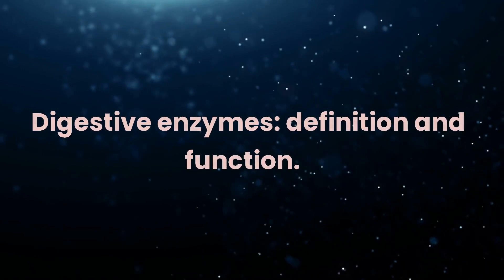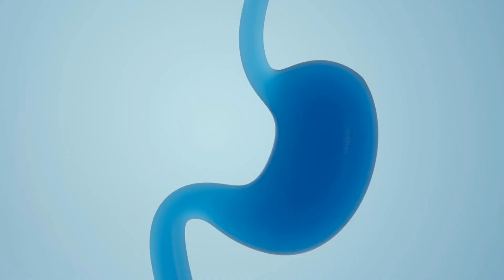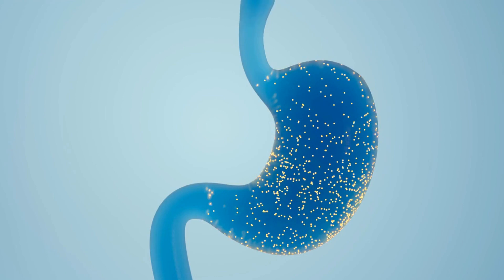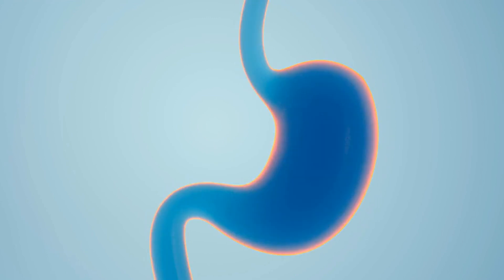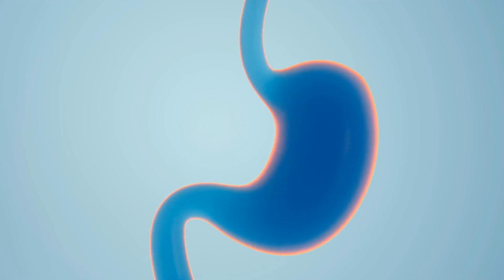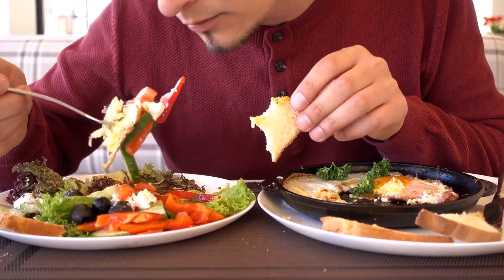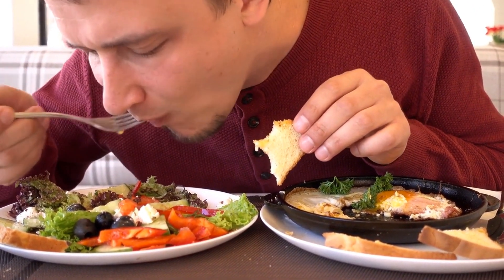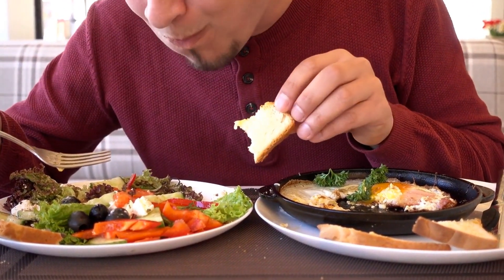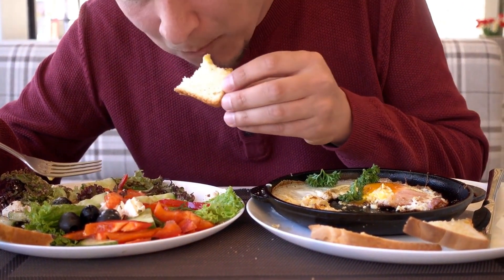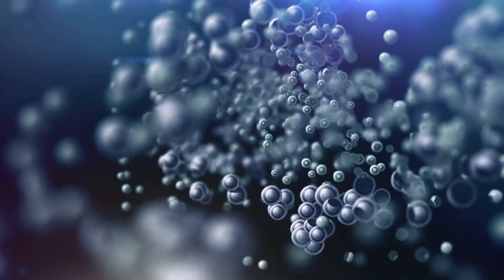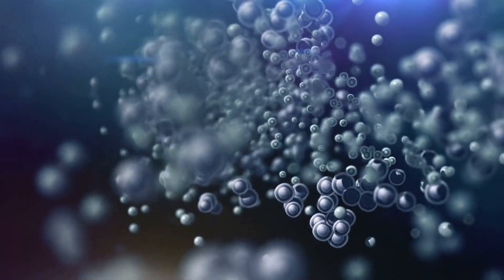Digestive enzymes — definition and function. In the context of the digestive system, enzymes play a vital role in breaking down complex food molecules into simpler components that can be absorbed by the body. These enzymes, known as digestive enzymes, facilitate the chemical reactions necessary to extract nutrients from the food we consume. There are several types of enzymes that target specific molecules in food.